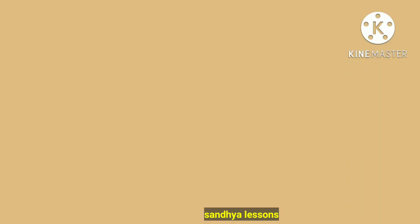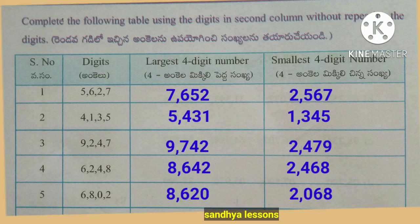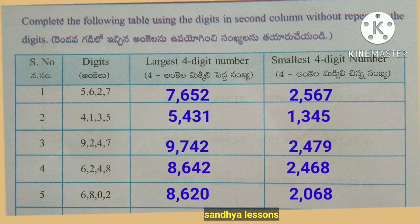Worksheet 11. Complete the following table using the digits in the second column without repeating the digits. Form the largest and smallest 4-digit numbers. With digits 7,6,5,2: largest 4-digit number is 7,652; smallest 4-digit number is 2,567. With digits 4,1,3,5: largest is 5,431; smallest is 1,345.